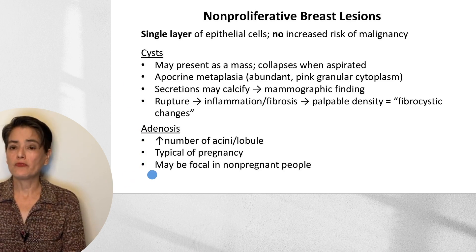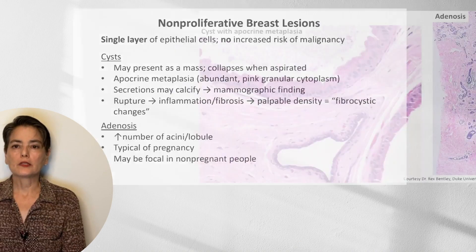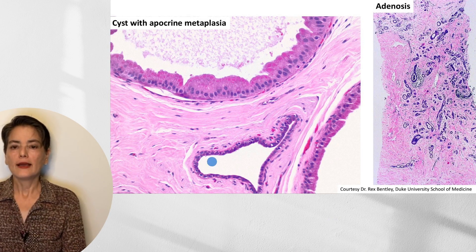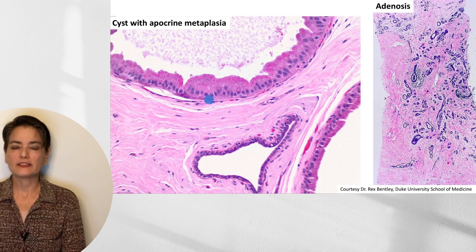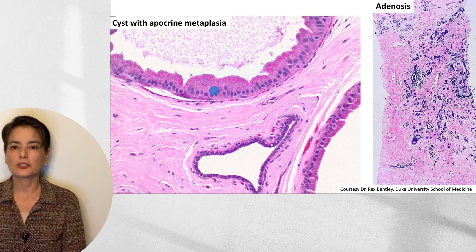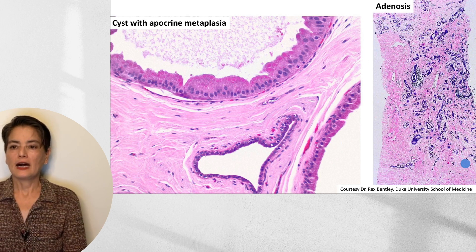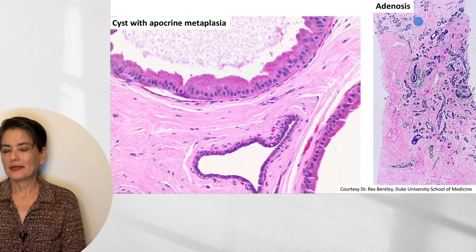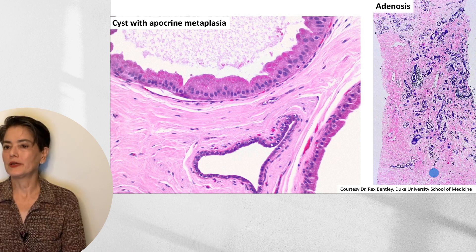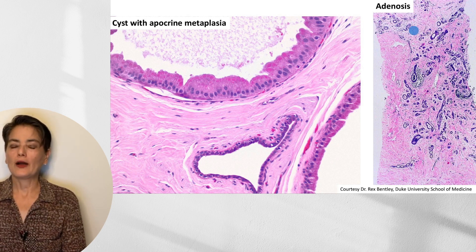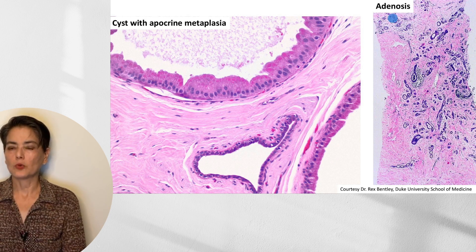Let's take a quick look at these two lesions. Here is a beautiful example of a cyst — you can see the cyst secretions. This tiny duct is lined by typical flat luminal cells. Here you can see apocrine metaplasia with abundant pink granular cytoplasm. This is a needle core biopsy showing adenosis. I would not expect any medical student to be able to distinguish this from malignancy. We have an increased number of acini in our lobule, which you can compare to this small one here.